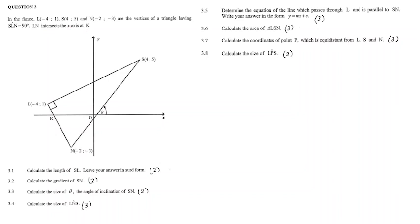Question 3.1. Calculate the length of SL. Leave your answer in surd form. To calculate SL, we can use the distance equation. The x-value of s, which is 4, minus the x-value of L, which is negative 4, and that's squared, plus the y-value of s, which is 5, minus the y-value of L, which is 1 squared. If we plug all of that into the calculator, we should get root 80, which is equal to 4 root 5.